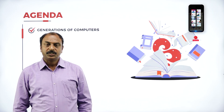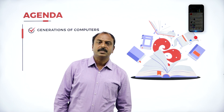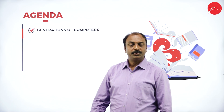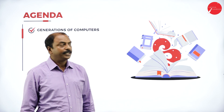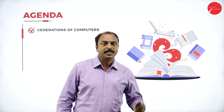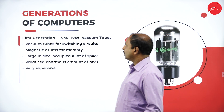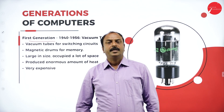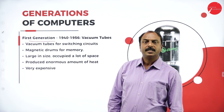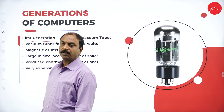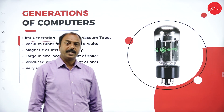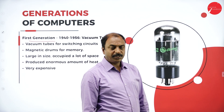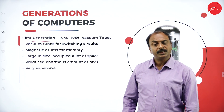In our previous session, we have discussed about the history of computers. After the history of computers and all developments in the field of computer science, we are going to study under the heading generations of computers. Let us start with the first generation of computers. In all the generations of computers, the main concept is the main electronic components they were using. Based on this, we have five generations of computers.